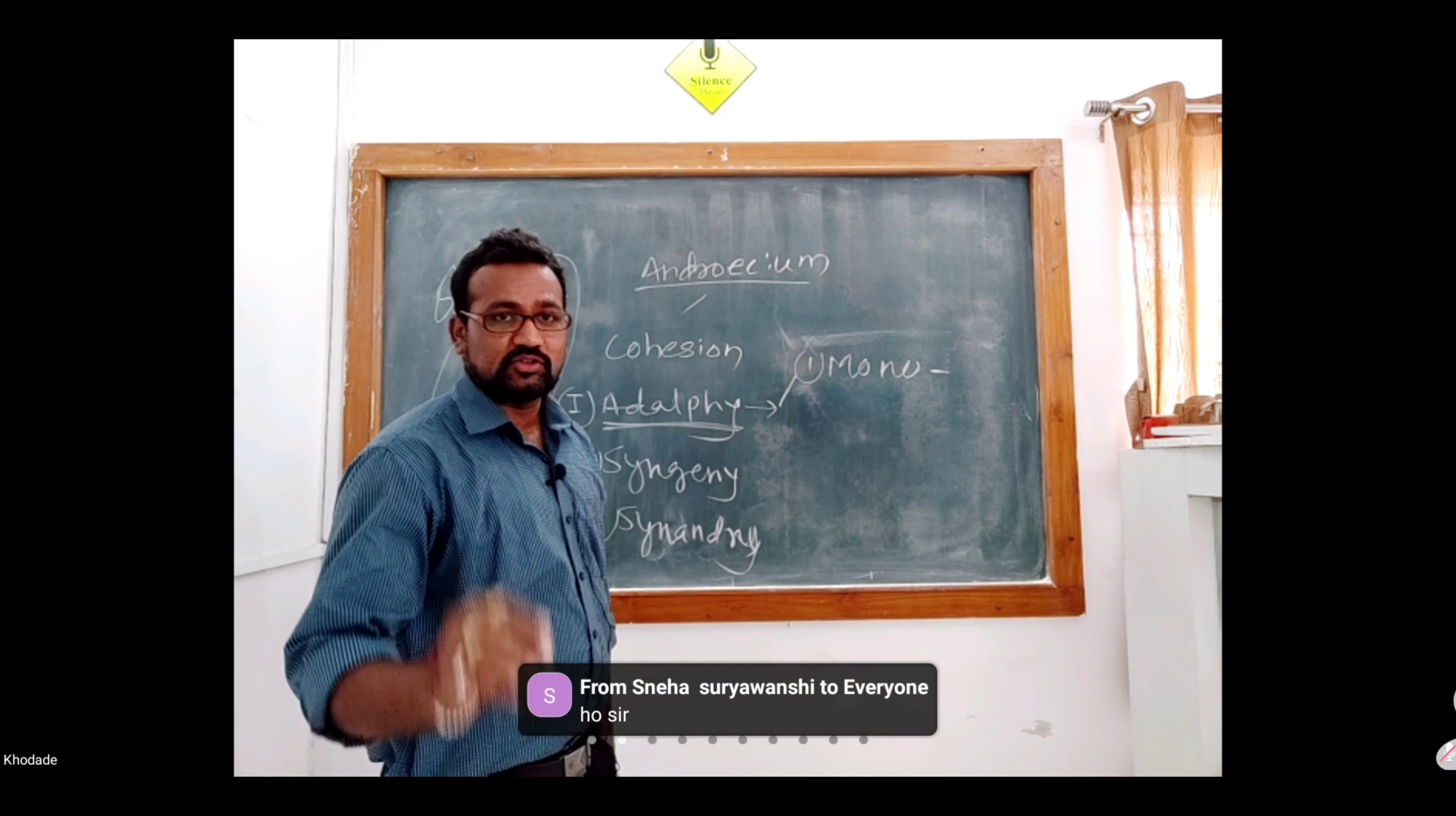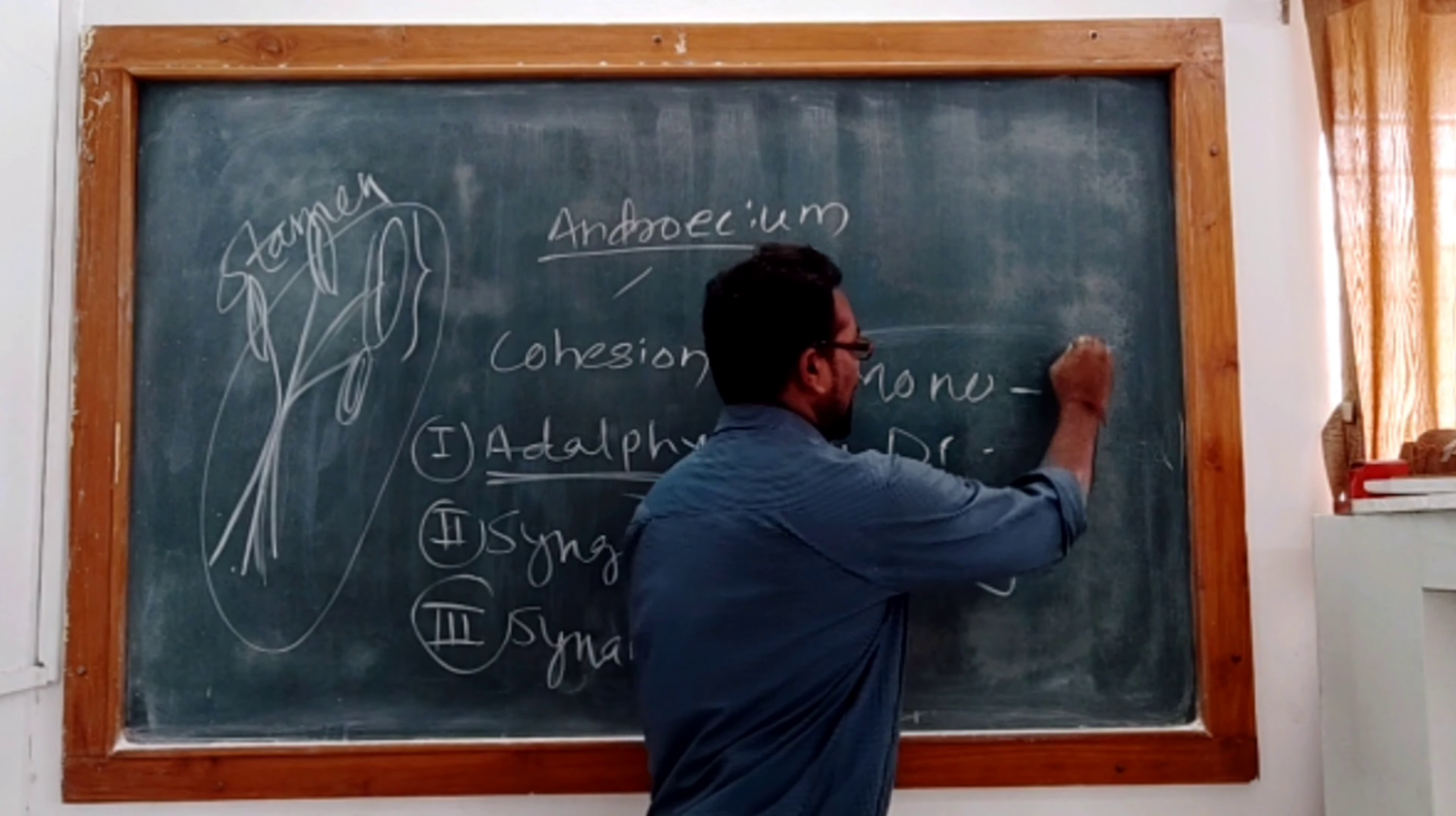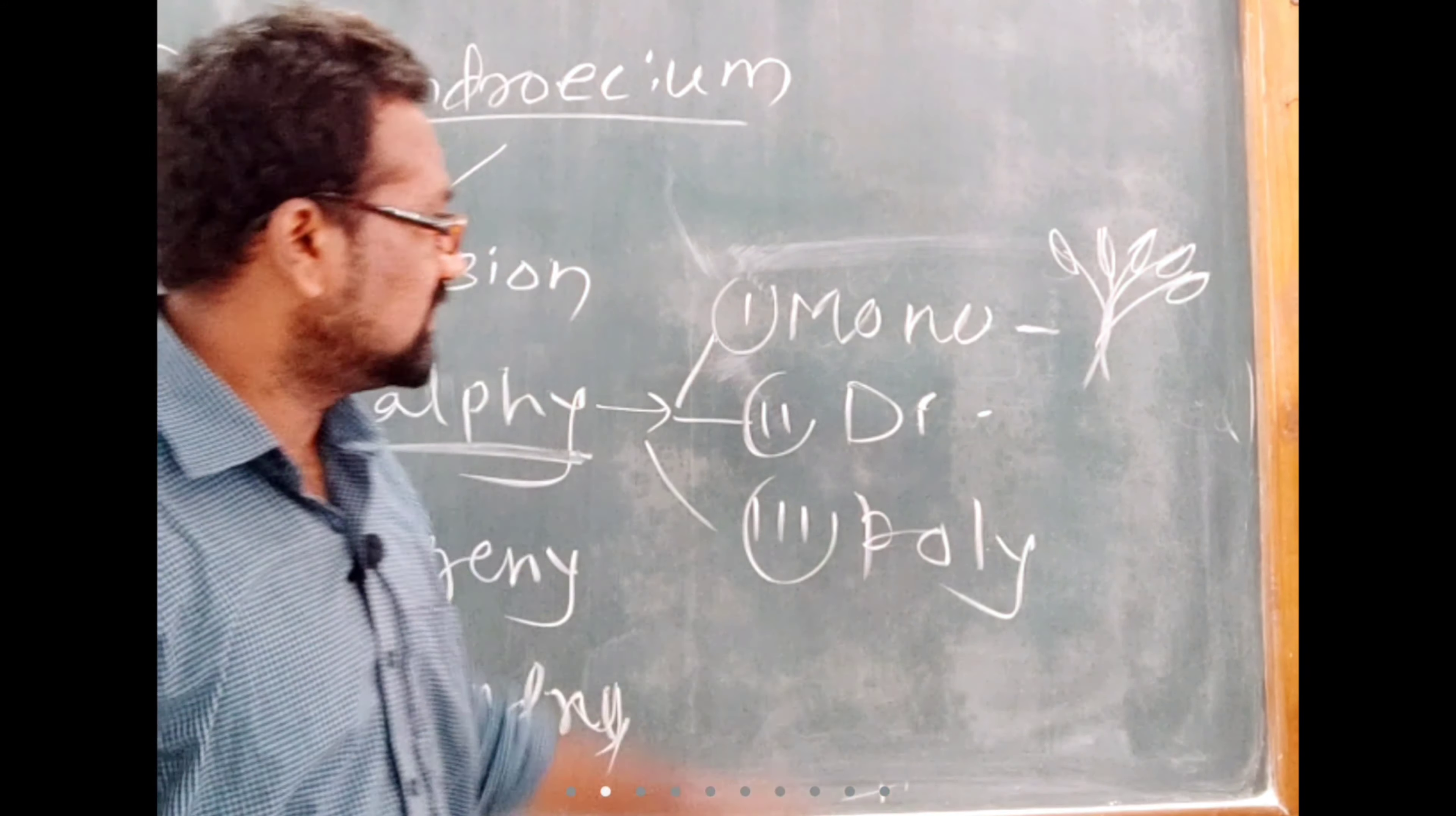In Adelphi we have monoadelphus, diadelphus, and polyadelphus. When all filaments are attached, anthers are free but filaments are attached together. In monoadelphus condition, we have said that when all filaments - suppose any flower contains 5 stamens or 10 stamens or 15 stamens - in that case if all filaments are attached and anthers are free, that is monoadelphus condition.